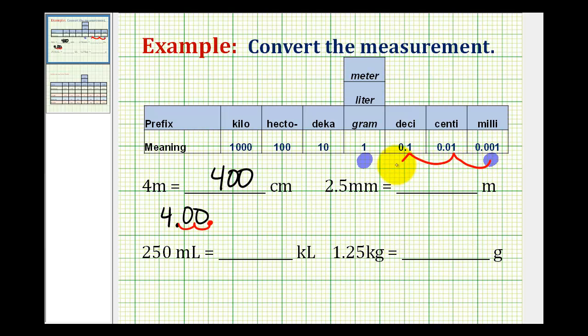Or by counting the number of columns we're moving from here, one, two, three columns to the left. So we can take 2.5, and move the decimal to the left three places.